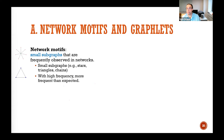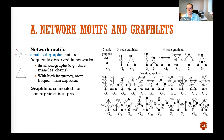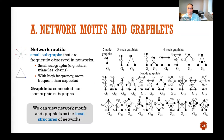Network motifs like stars or triangles have higher frequency than expected by some null model. A graphlet is a connected non-isomorphic subgraph — you have a codebook where you look and say your graph has a lot of G15s and G17s. If someone sees the output in terms of two G15s and one G17, they look up the codebook and understand what the graph is built from. These capture the local structures of the network.